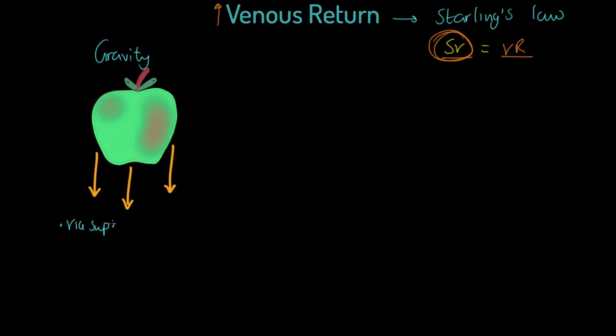Gravity helps blood return to the heart depending on the position of the body and depending on where the blood is. If we have got blood in what we call our superior vena cava, and this is the vena cava that's coming from the upper body, let's describe it as the arms, the shoulders, the head.